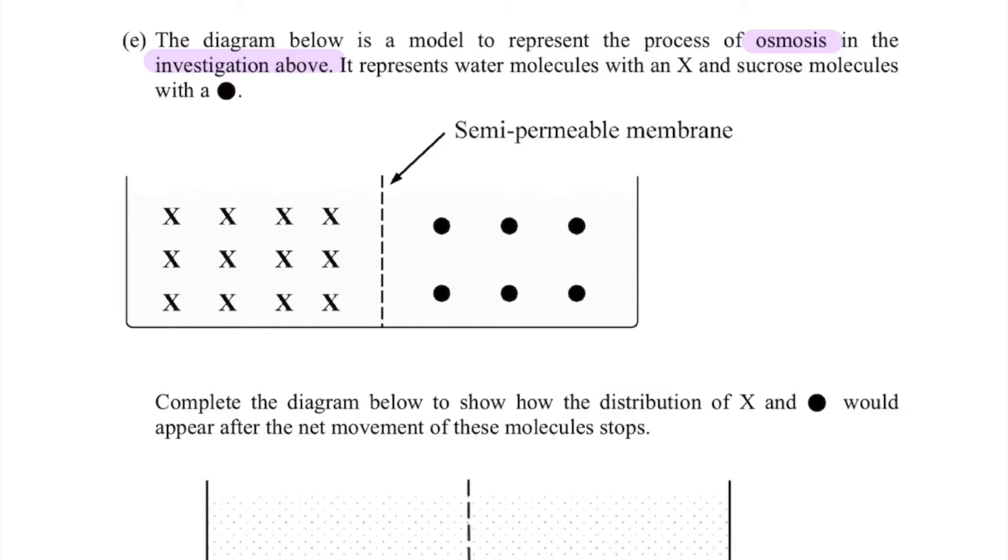X's mark water and sucrose are our dots. Key thing we have to understand is water is going to move from high concentration to low concentration to make it equal, and sucrose molecules are far too large to be able to pass through the semi-permeable membrane of dialysis tubing.